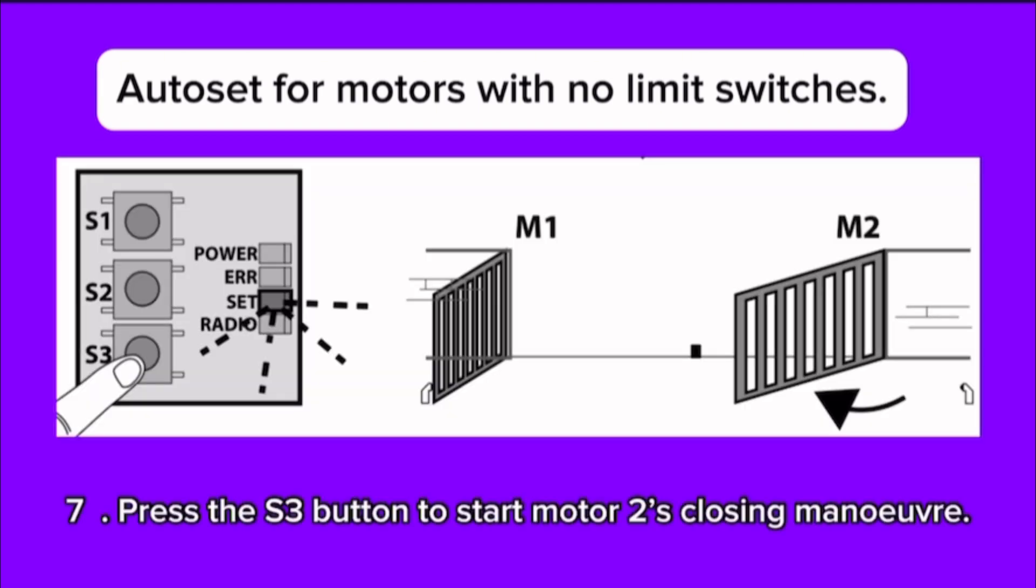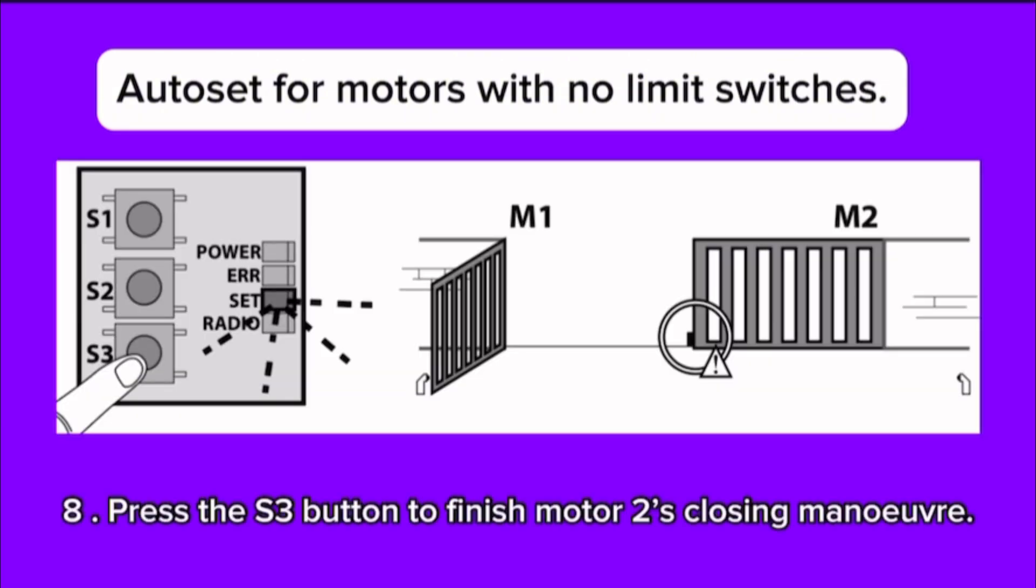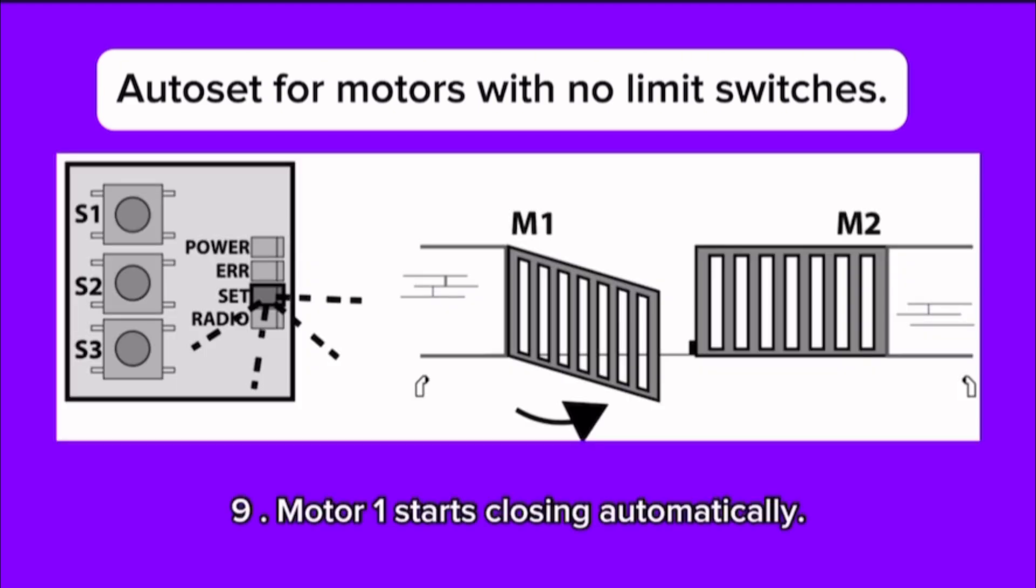Step 7: Press the S3 button to start motor 2's closing maneuver. Step 8: Press the S3 button to finish motor 2's closing maneuver. Step 9: Motor 1 starts closing automatically.